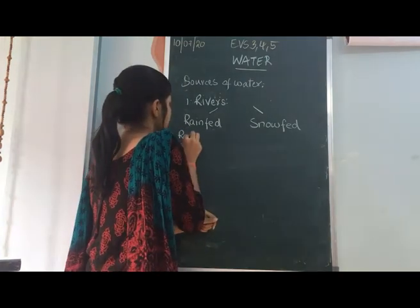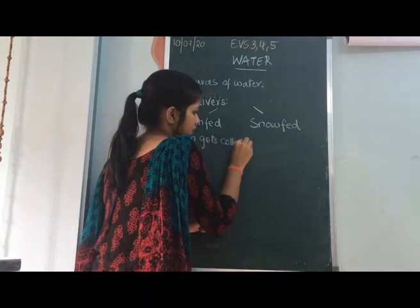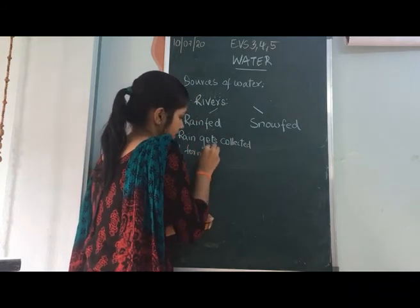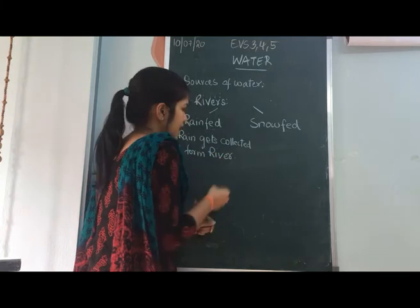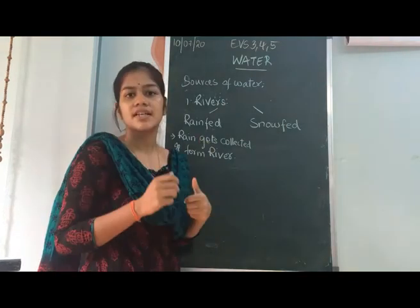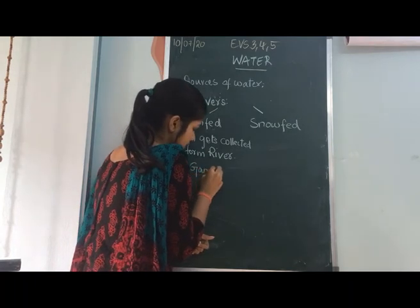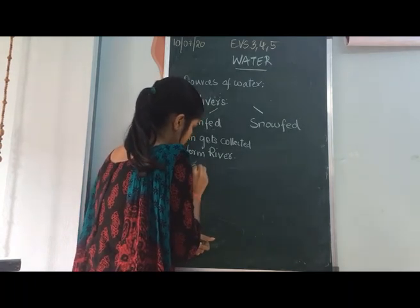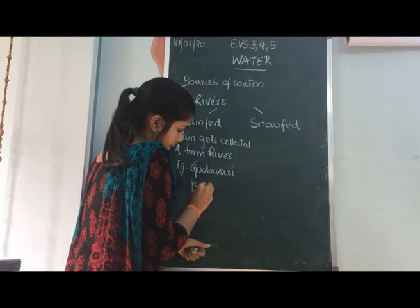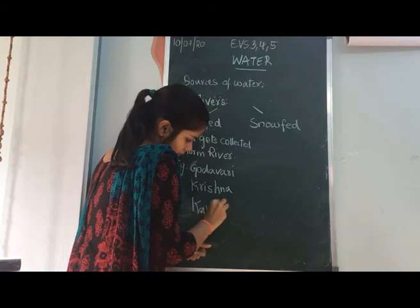Rain gets collected and forms rivers. This means you mainly see rain-fed rivers in the rainy season; in summer these rivers dry up. Examples of rain-fed rivers are Godavari, Krishna, and Kaveri.